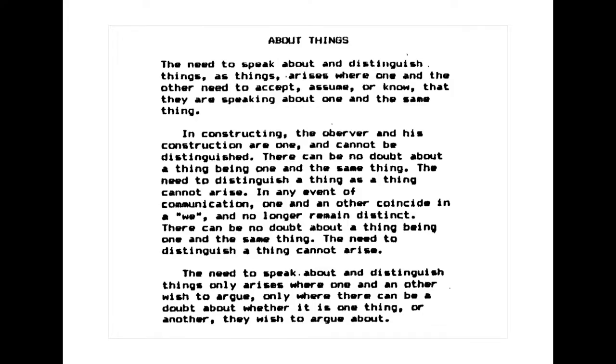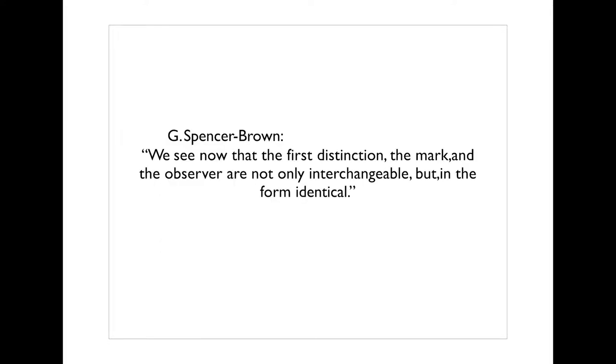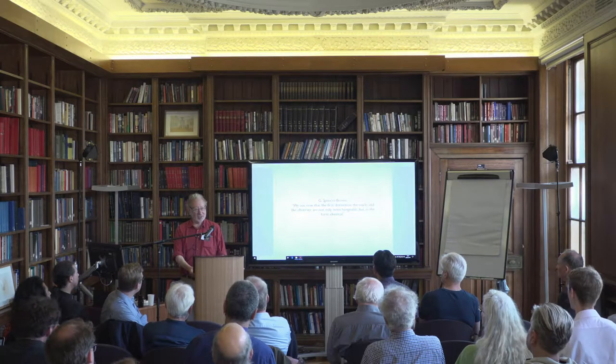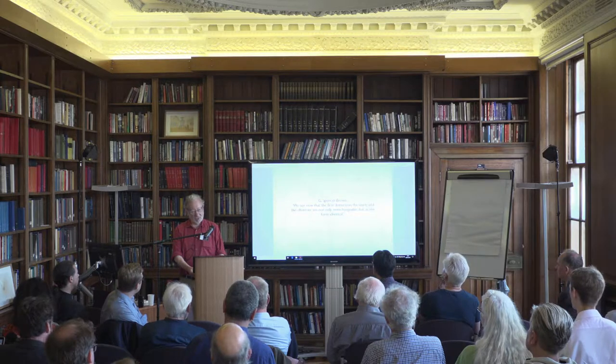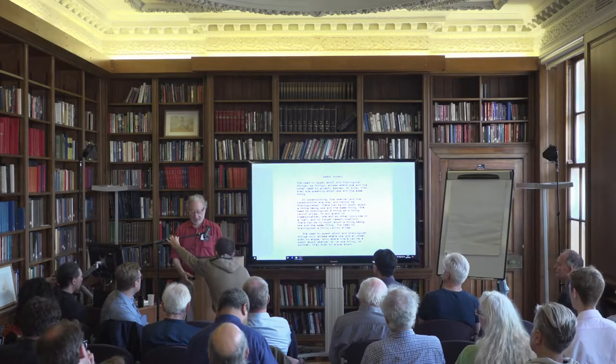cumbersome ways which the child found to make such grown-ups blind to the simplicity of things when he drew his drawing number one. It was a picture of a boa constrictor digesting an elephant. In constructing, the observer and his construction are one and cannot be distinguished. I'll take you to the end of Laws of Form, where Spencer Brown says, we see now that the first distinction, the mark and the observer, are not only interchangeable, but in the form identical. This is a kind of sentence that Spencer Brown wrote,